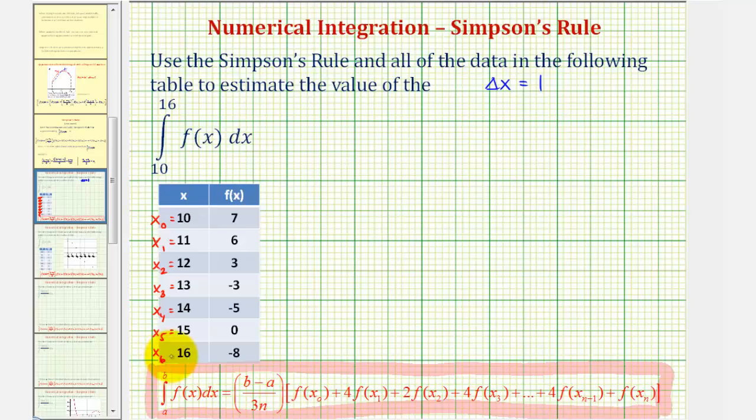Notice x sub six is the last x value of 16, which means n equals six, which is good news because n must be even in order to use Simpson's rule.